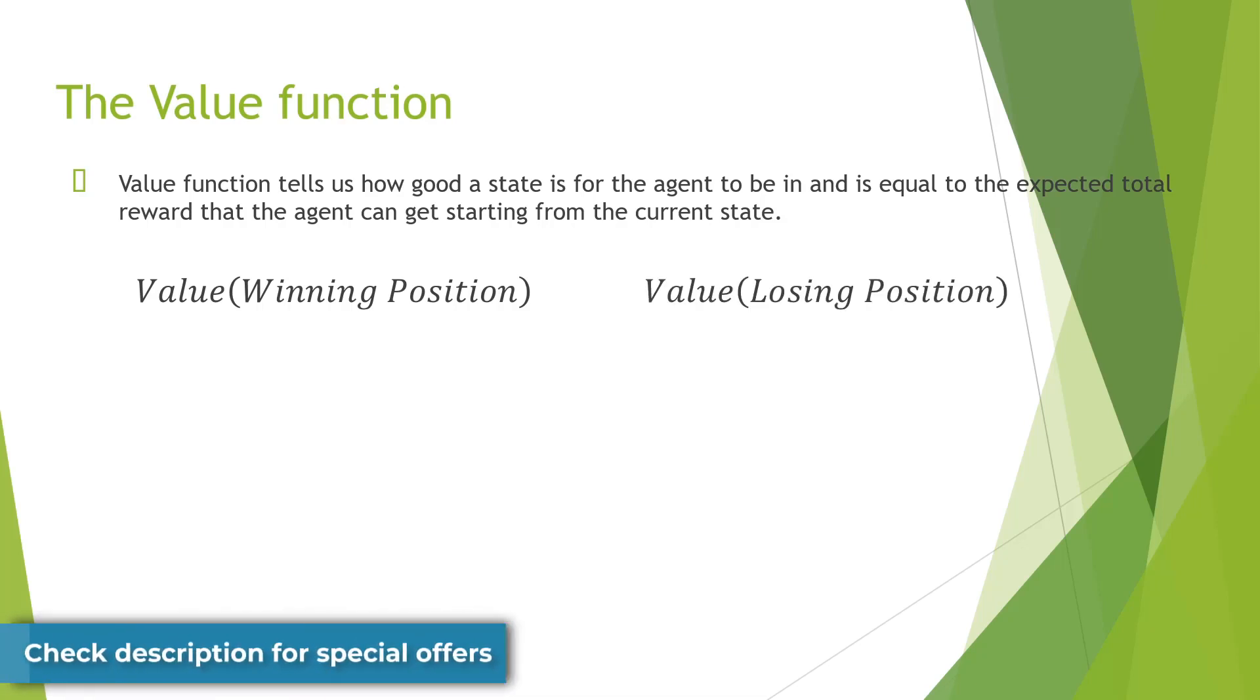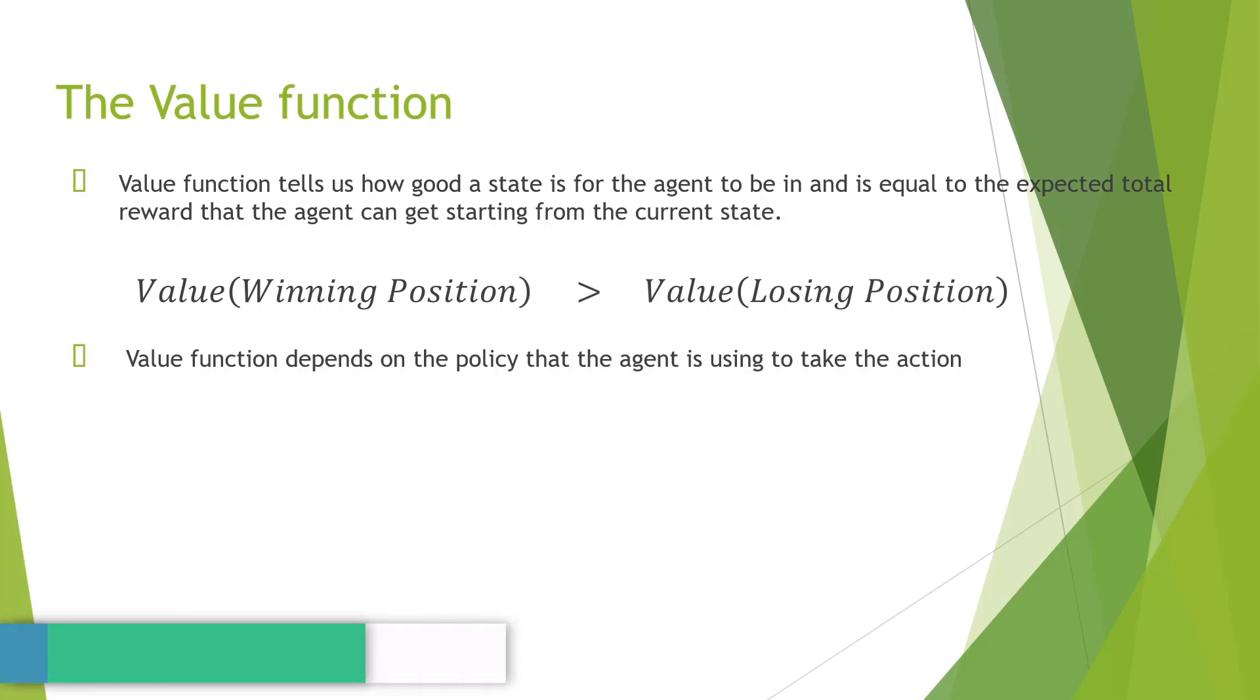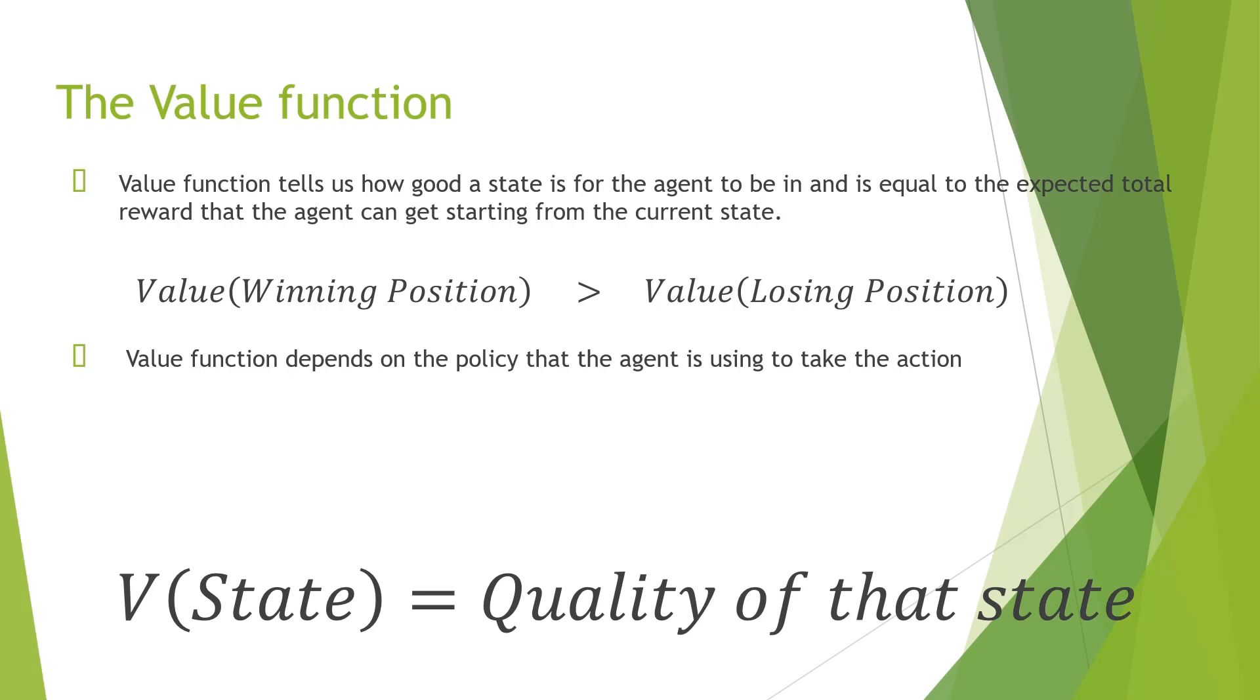If you think about it, the value function depends on the policy that the agent is using to take the action. This is because different policies will give different actions and thus different value functions. We'll learn this in more detail later in the course. The value function can be written as a function v which takes in a state and returns the quality of that state for the agent to be in.